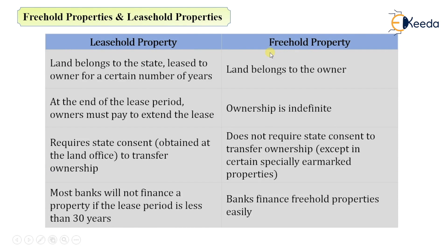Now let's differentiate these two in tabular form. In leasehold property, the land belongs to the state and is leased to the owner for a certain number of years, whereas in freehold property the land belongs to the owner. At the end of the lease period, the owner must pay to extend the lease, while in freehold property the ownership is indefinite. In leasehold property, state consent is required to transfer ownership, but in freehold property no state consent is needed.